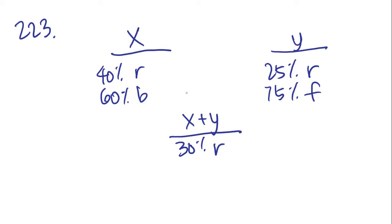They only really care about ryegrass. We can ignore the bluegrass and the fescue — that's just here to overly complicate the problem. So we have 40% ryegrass and 25% ryegrass.